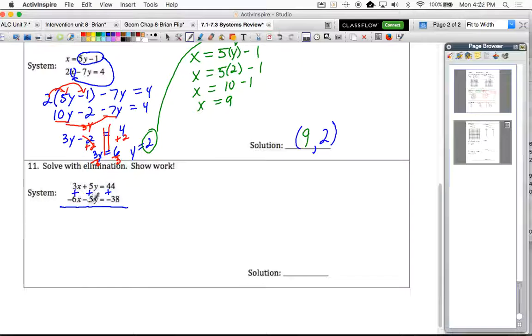...like positive 5y and positive 5y down here, we would have to subtract to eliminate. But since they're opposite in sign, we will add to eliminate. So we add all the way across here. Please put the plus signs, the addition signs in here.